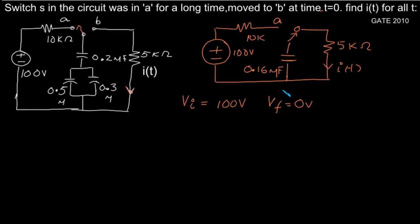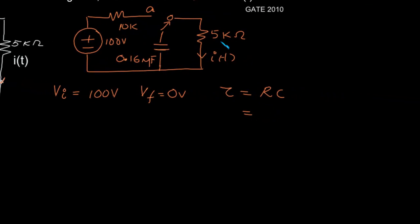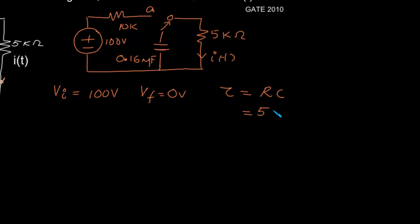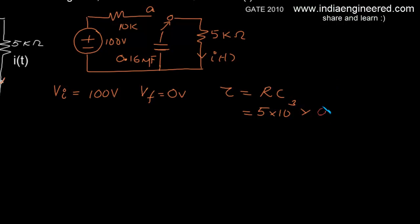To find how the voltage exponentially decays, we need the time constant tau, which is given by the RC time constant. We have R equal to 5K and capacitance equal to 0.16 microfarads, which gives a time constant tau of 8 times 10 to the power minus 4.